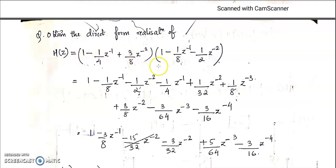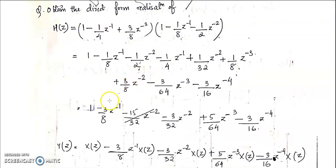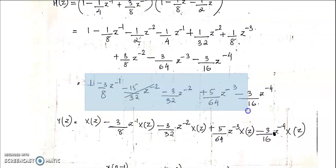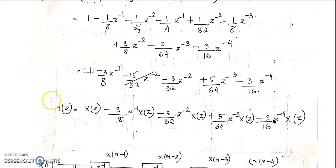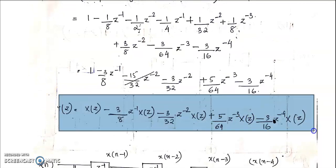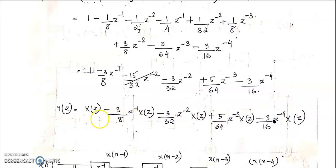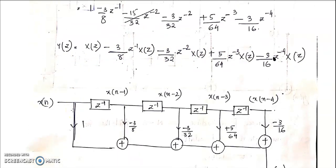We can open the bracket and multiply the terms. You will get an expression. Then, we know that H(Z) = Y(Z)/X(Z). Substituting that, Y(Z) can be expressed accordingly. Then we move on to the inverse Z-transform.